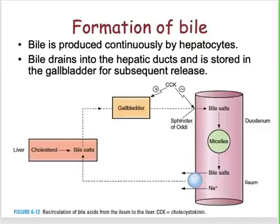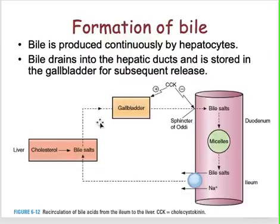How do we form bile? Bile is produced continuously by your hepatocytes. The bile that is produced by your hepatocyte drains into the hepatic ducts and is stored in the gallbladder for subsequent release. Your bile salts are recirculated in your GI tract.